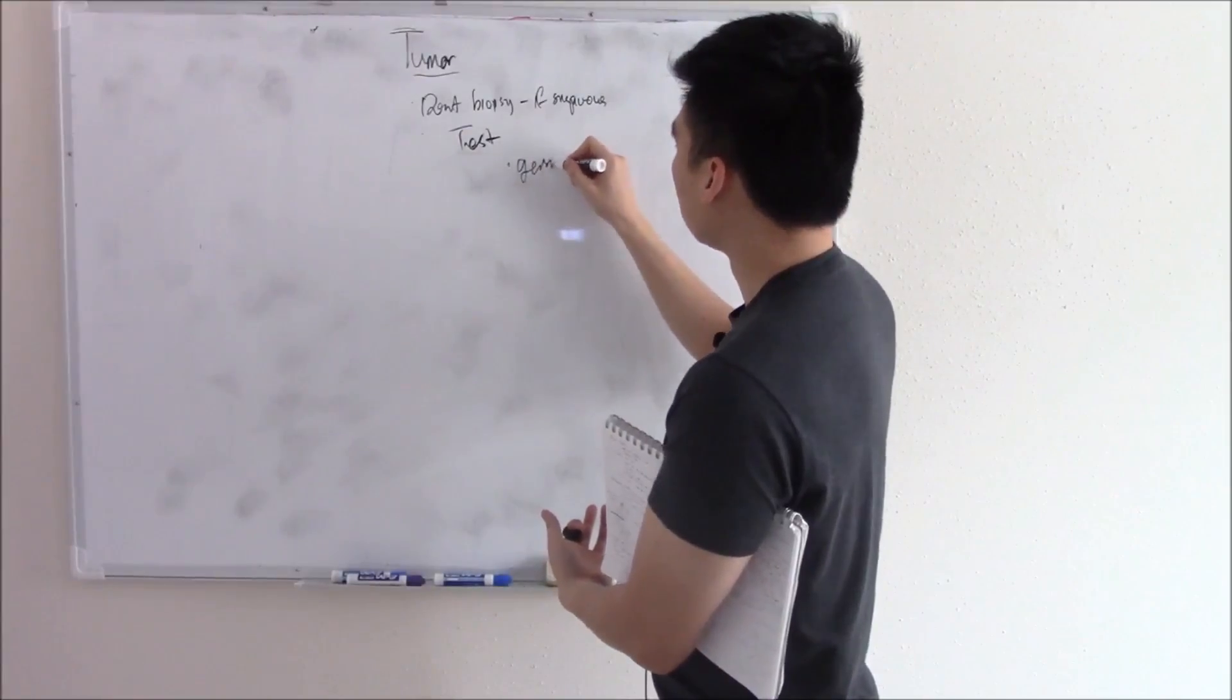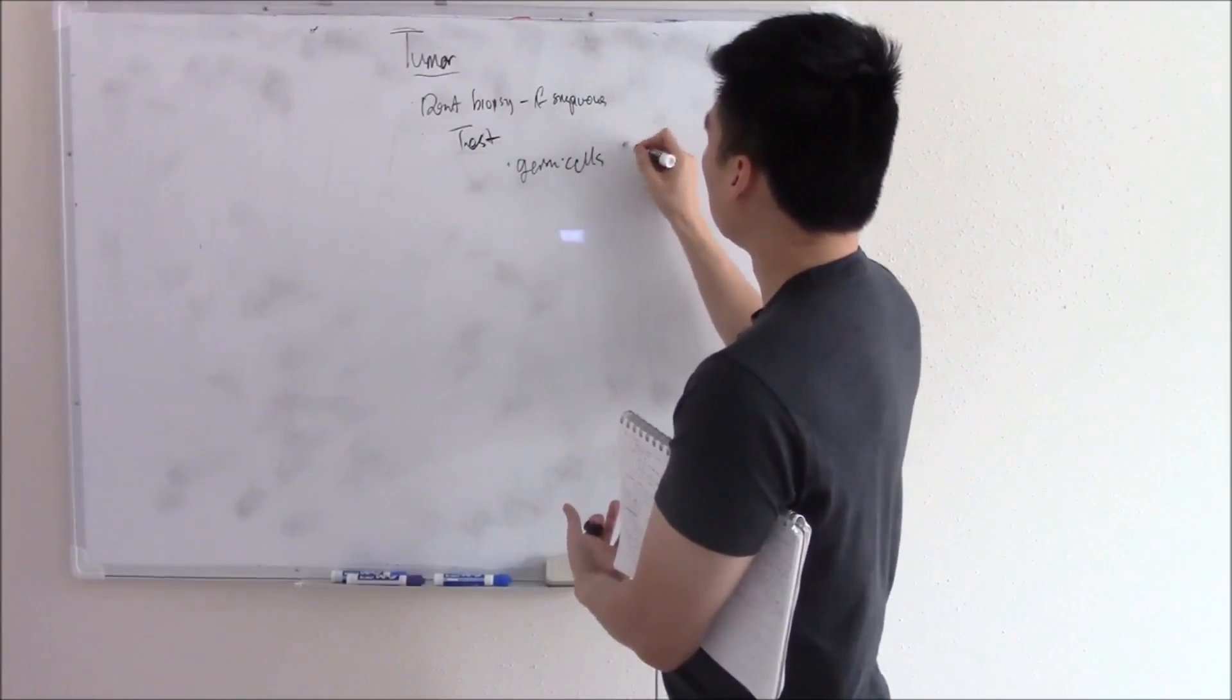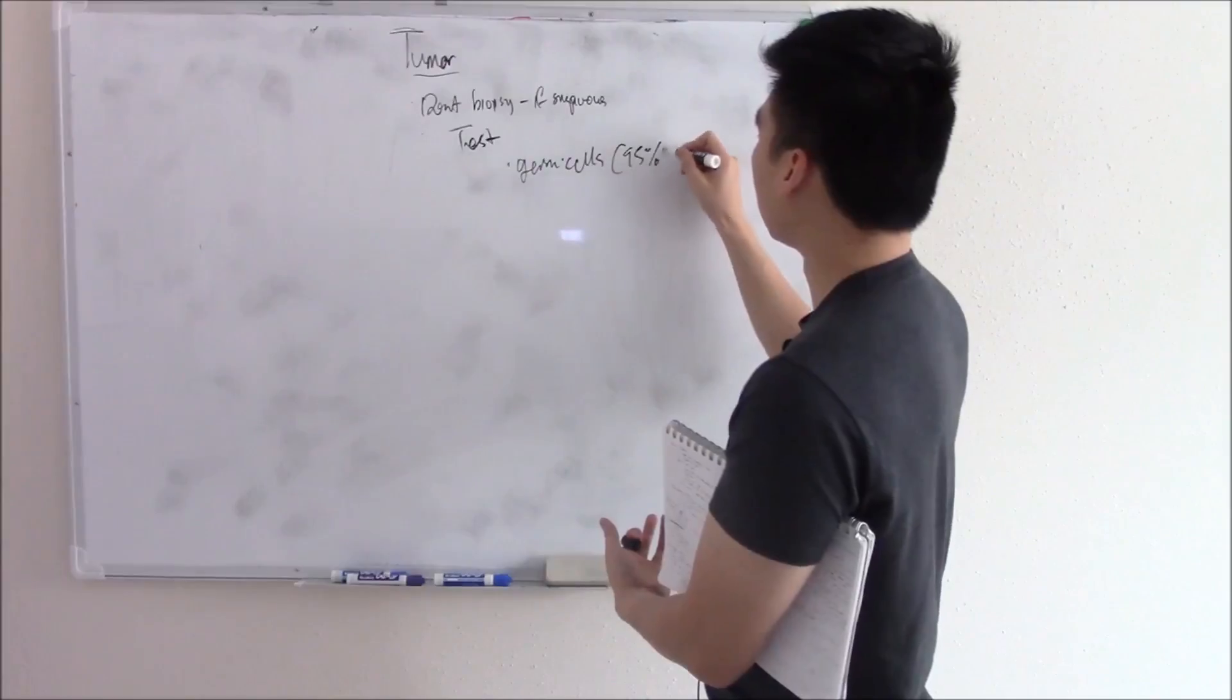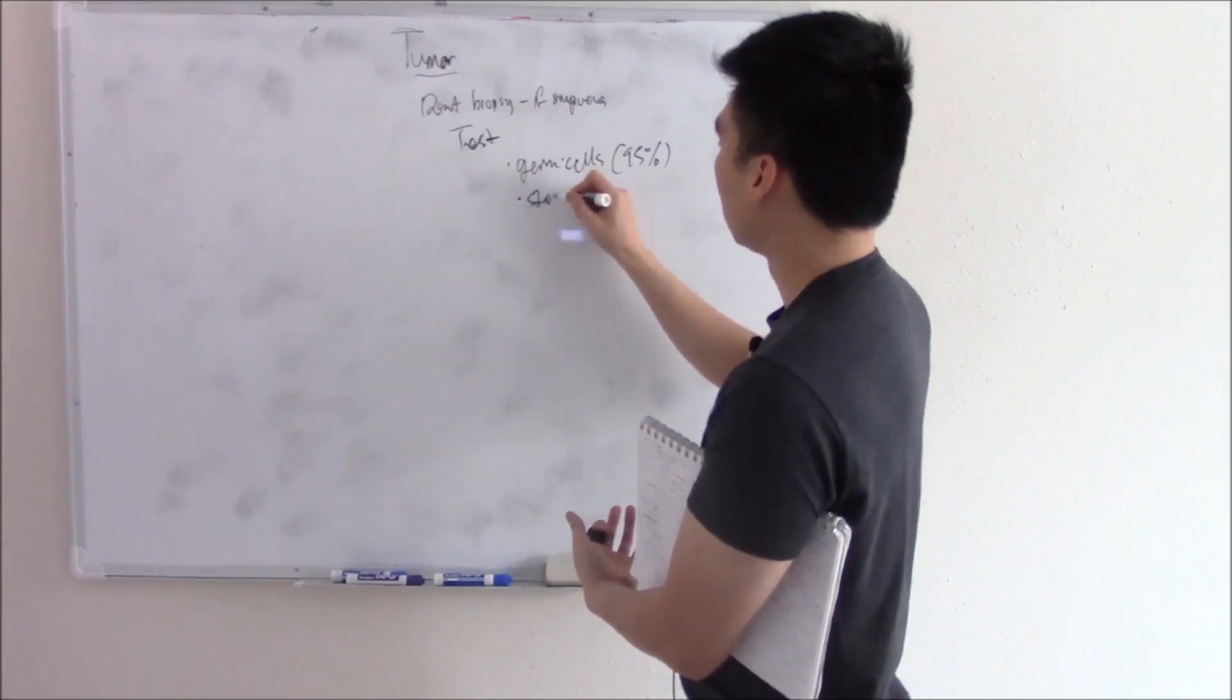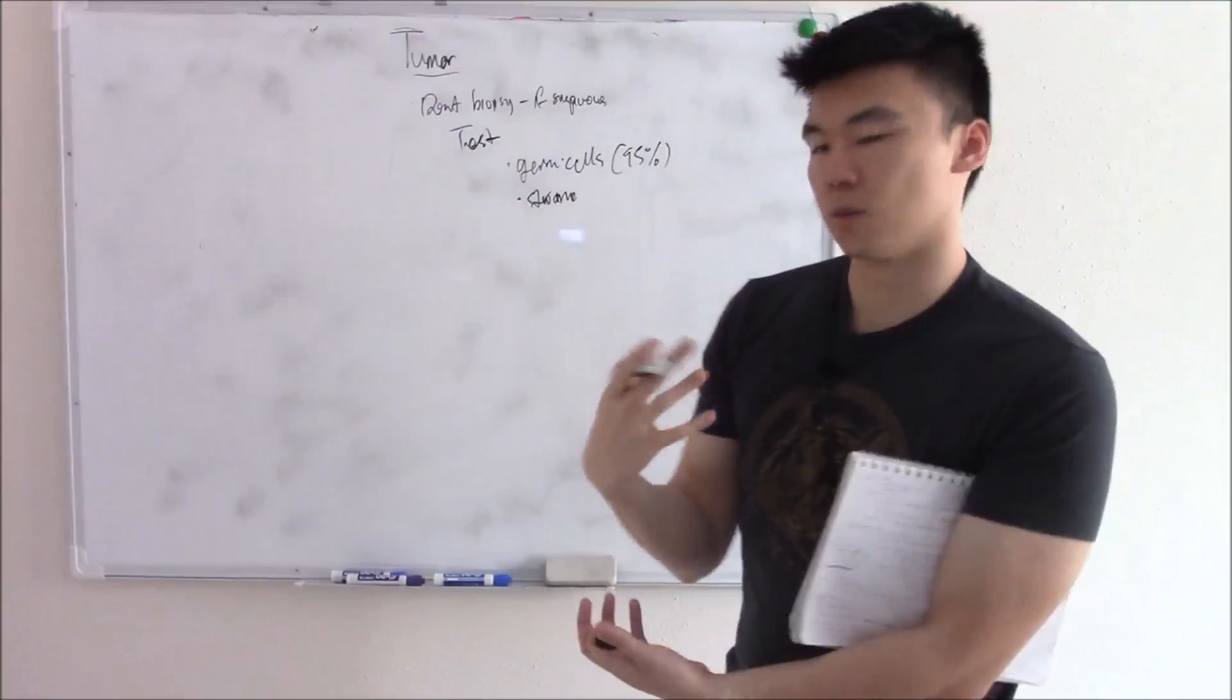So we still have your germ cells, which in fact is the most common, about 95%. We still have your stromas. But we don't have your epithelial cell tumors.